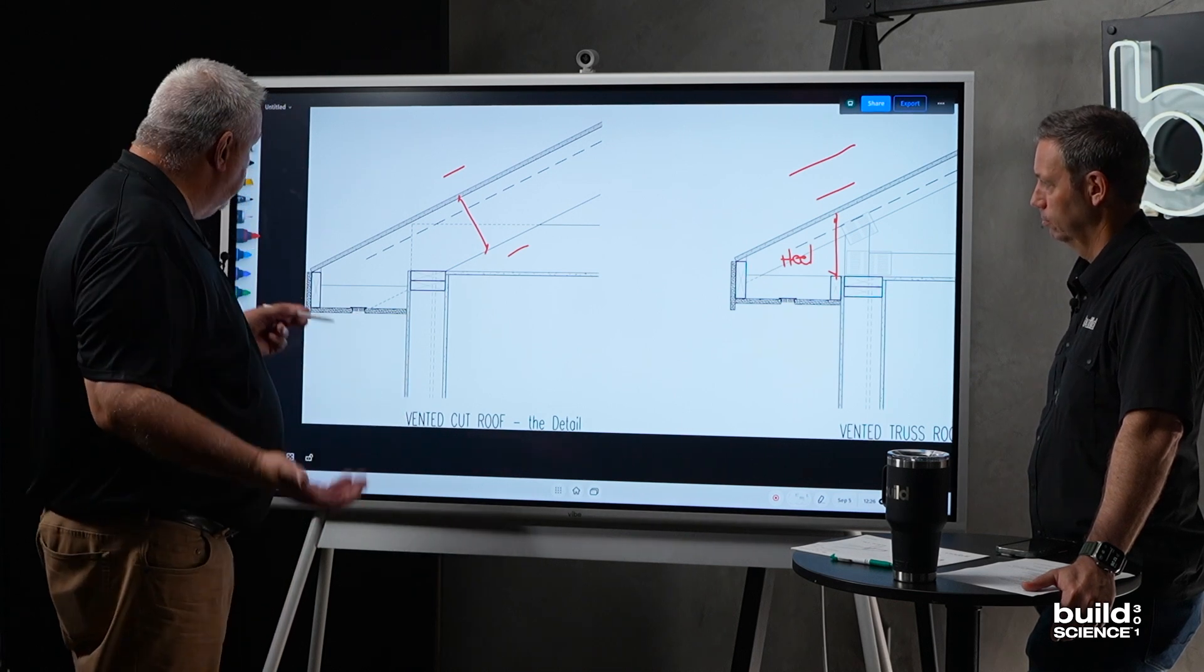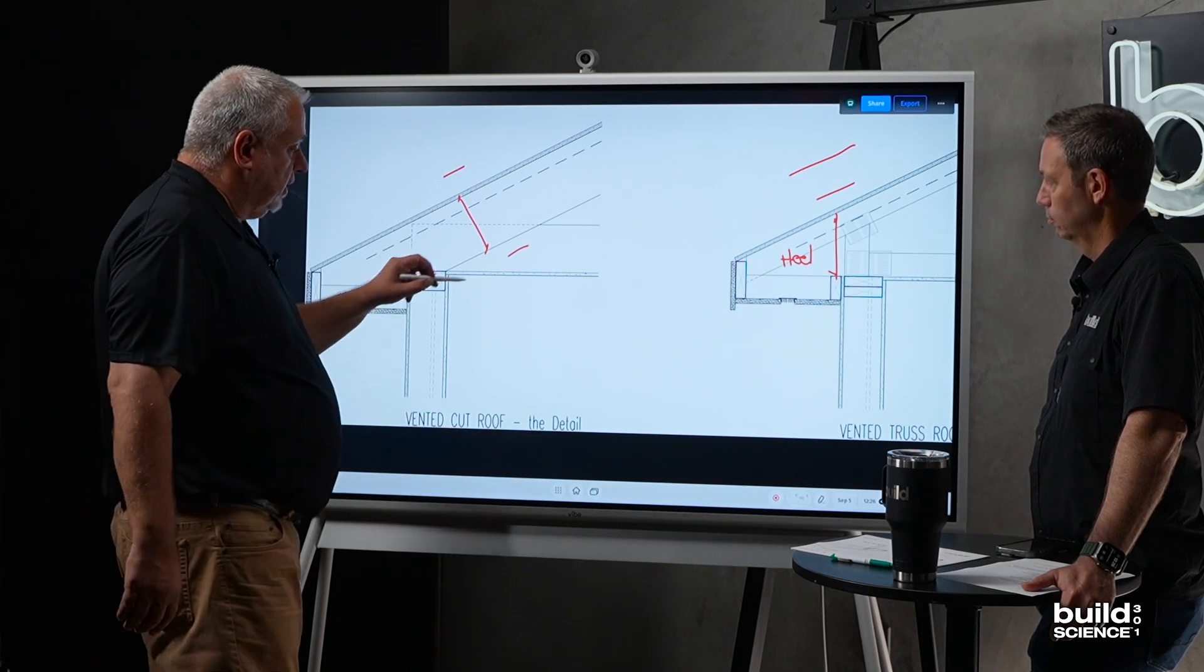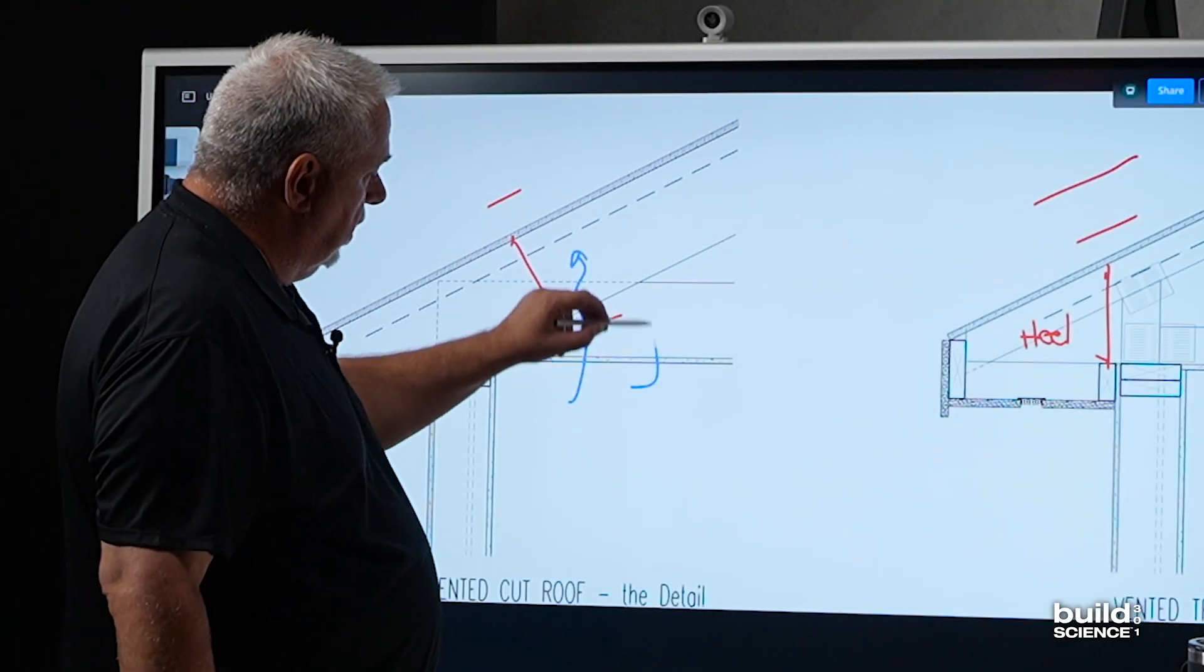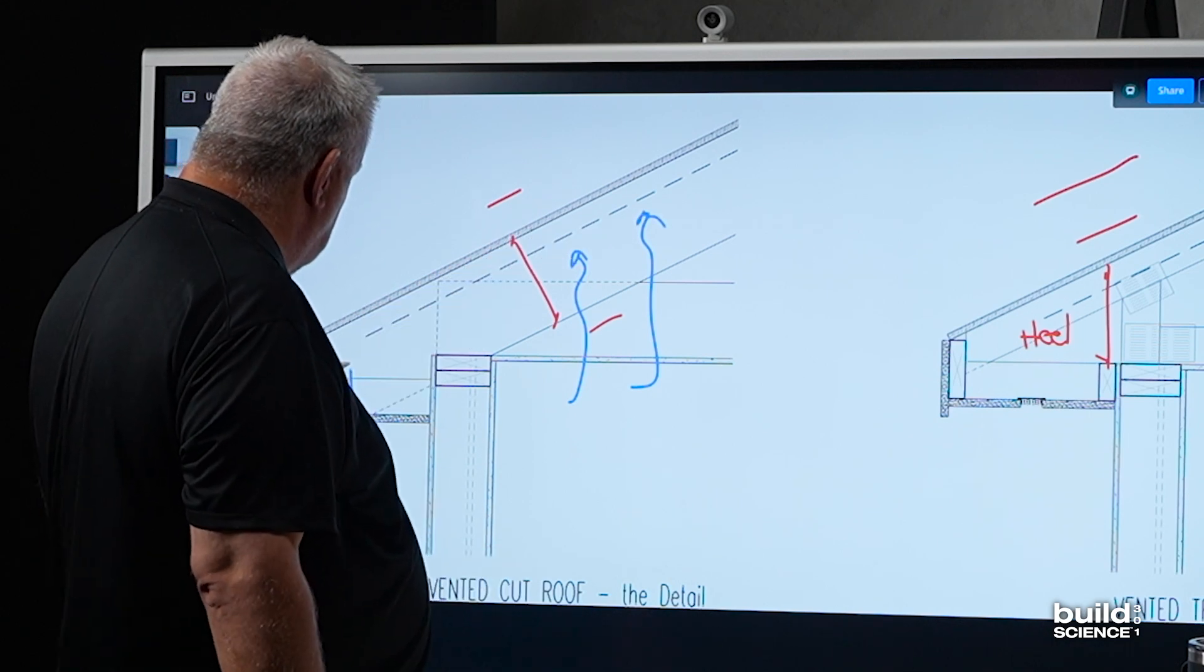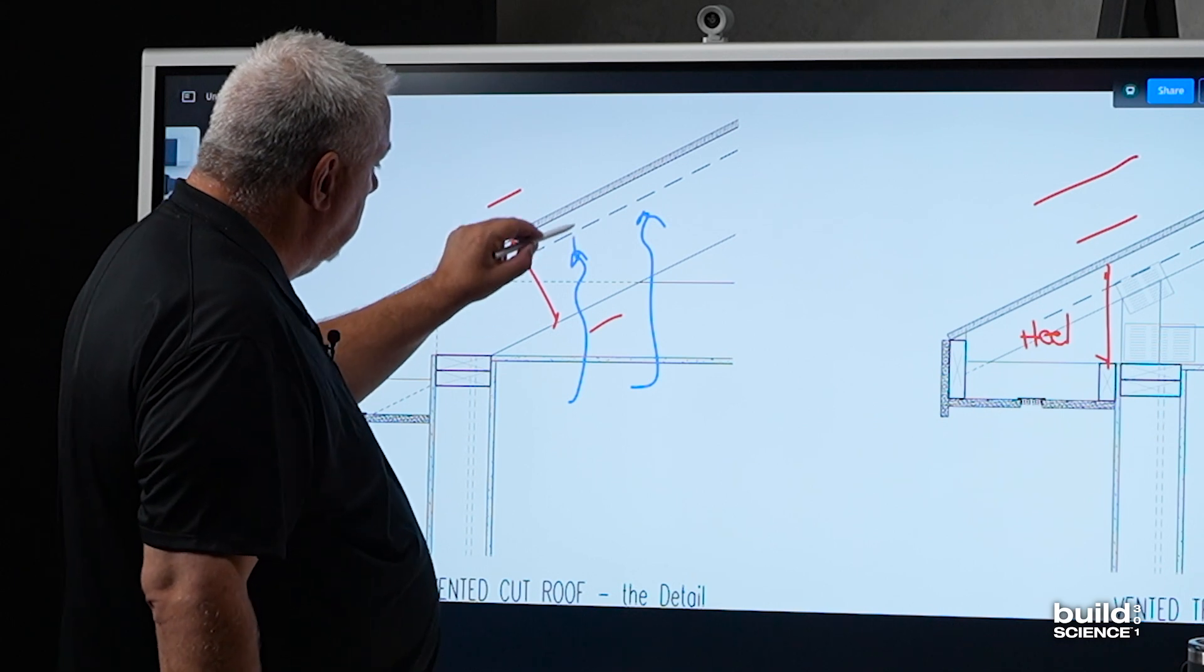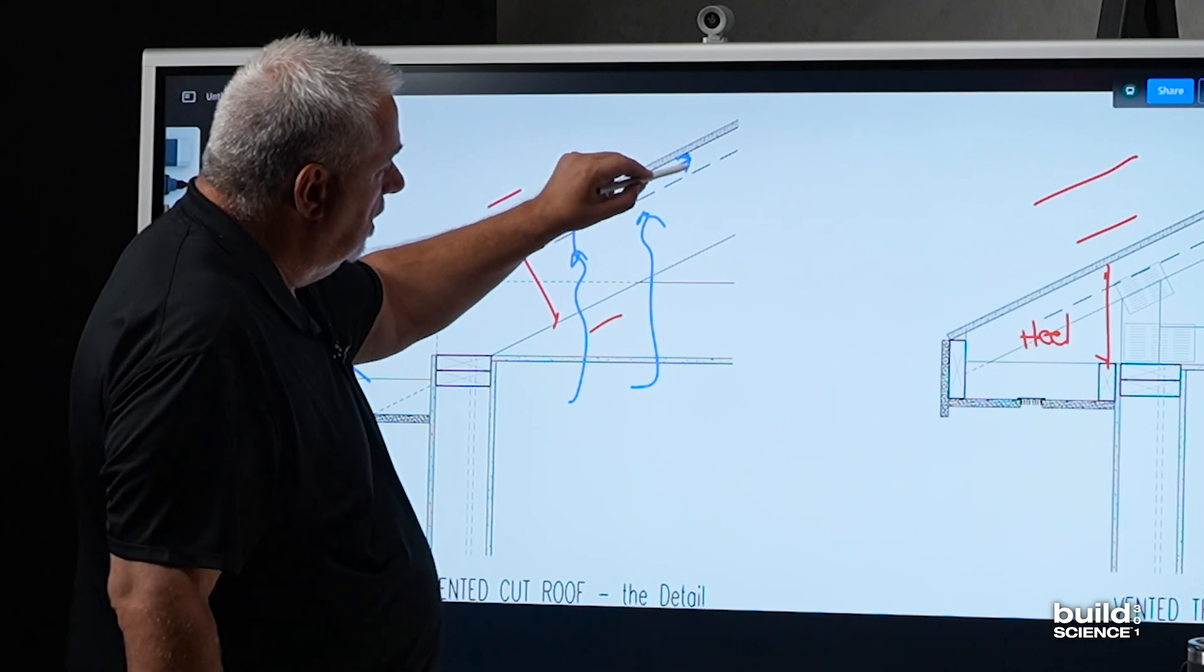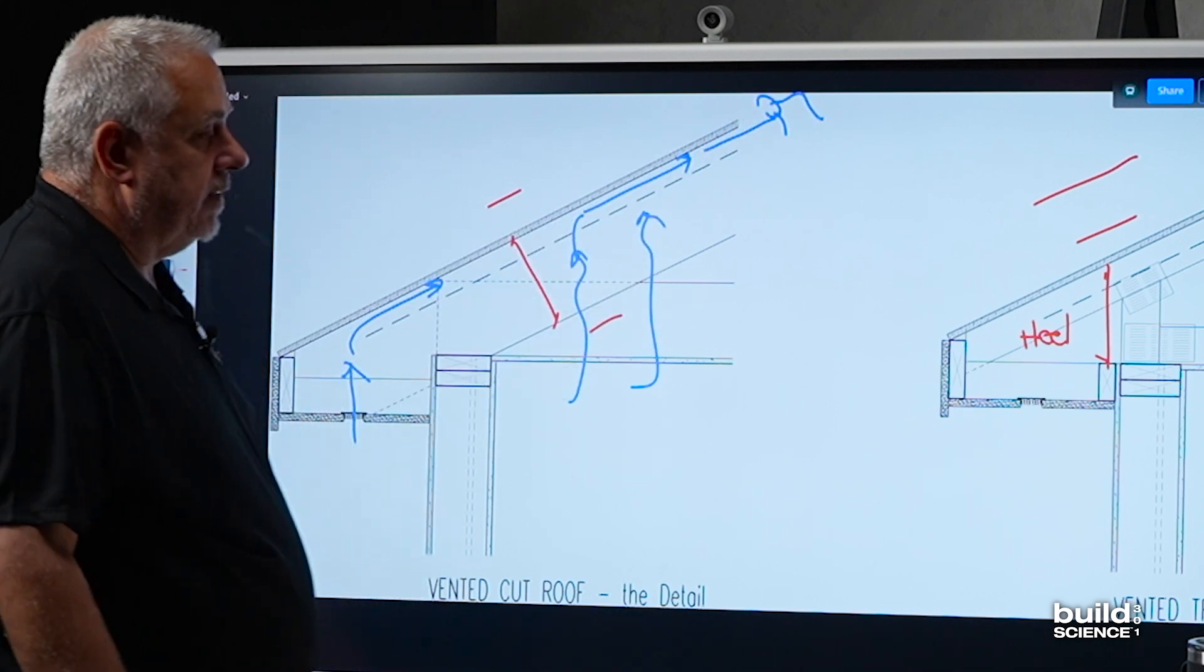Right, but vented roofs, it's a pretty simple concept, building science. We lose some moisture to the attic. We introduce airflow here. It goes up a vent. But this moisture goes into there and gets whisked away out a ridge vent on the top.